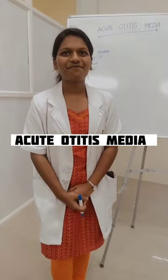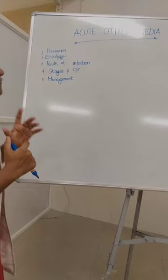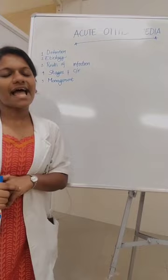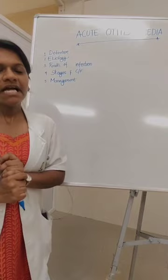Acute otitis media is going to be explained under five headings. The first heading is about its definition. It is defined as a middle ear infection that is caused by a pyogenic organism.